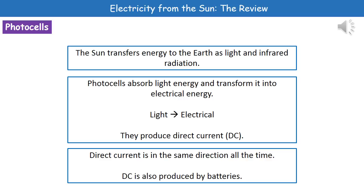The reason it's called direct current is because it flows in the same direction all the time. Aside from photocells, we also see direct current being produced by batteries.